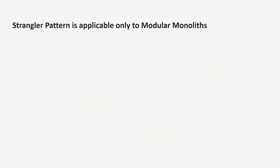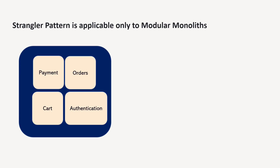But can we apply this pattern to all monolithic applications? The answer is not black and white. Suppose you have a big monolithic application with many functionalities — for example, an e-commerce application that generally has a cart, orders, authentication for users, and payment functionalities. But even when it is a big application, you have modules. You have a modular application.